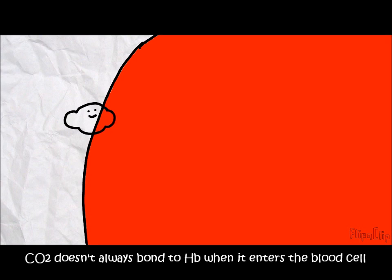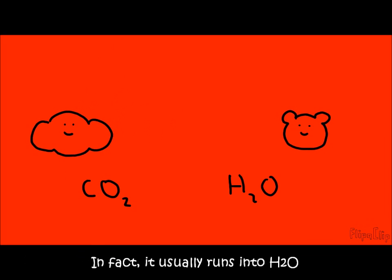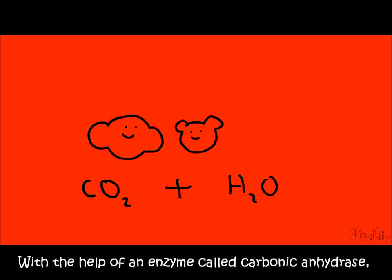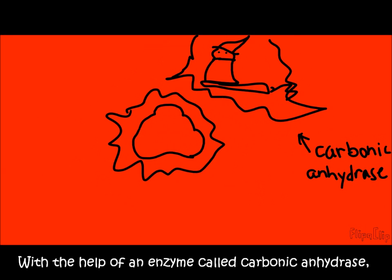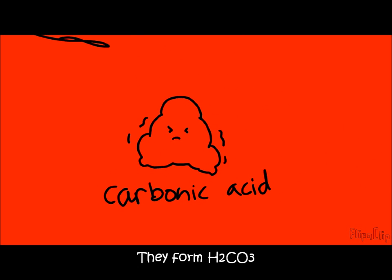Carbon dioxide doesn't always bond to hemoglobin when it enters the cell. In fact, it usually runs into water. So, with the help of an enzyme called carbonic anhydrase, they form carbonic acid.